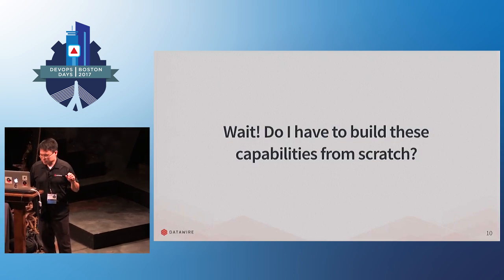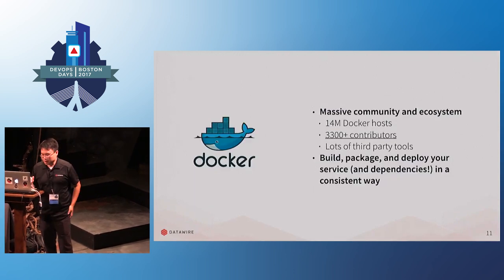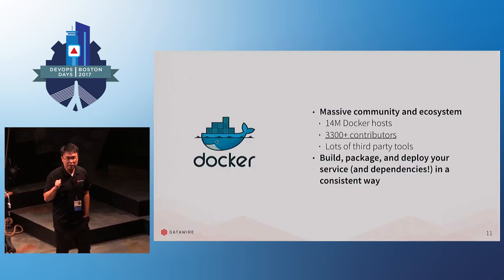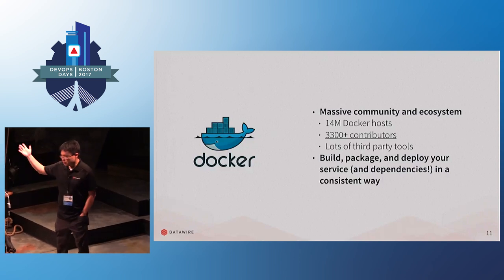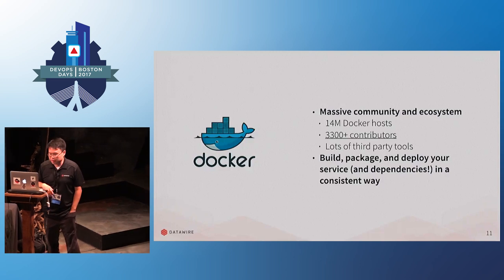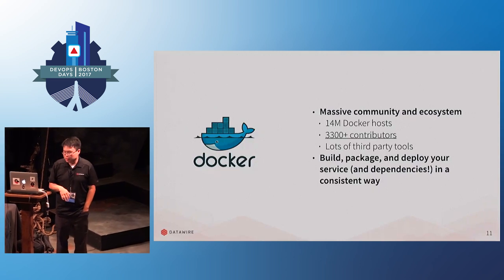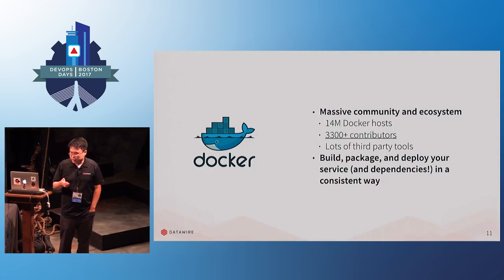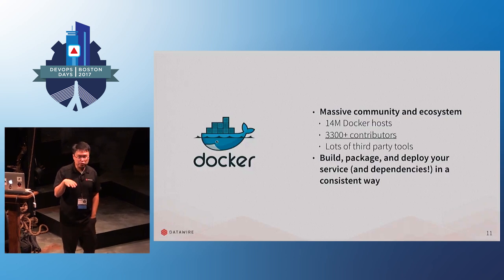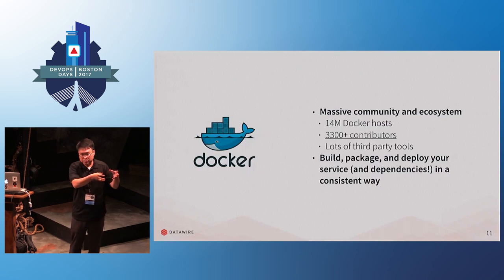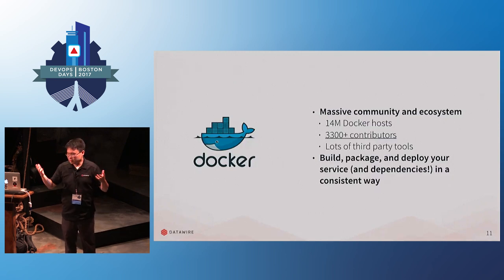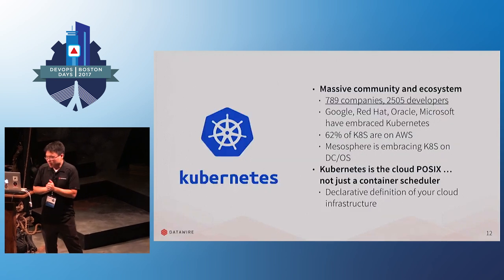This sounds like a lot of work, so do you have to build all this from scratch? Luckily, the industry has come a really long way. We're big fans of the Cloud Native Compute Foundation, part of the Linux Foundation, which has done an amazing job identifying emerging technologies that cloud-native companies should look at. I'm going to highlight three foundational components that provide what I call safe self-sufficiency. The first one is Docker. Most people know Docker — it has a massive community ecosystem and lots of third-party tools. It lets you build, package, and deploy your service and its dependencies in a consistent way that you can run in a whole bunch of different places: your laptop, your VM, or in Kubernetes.